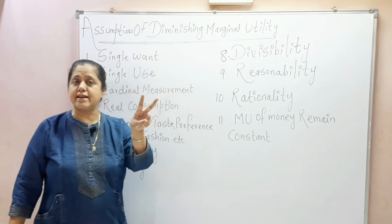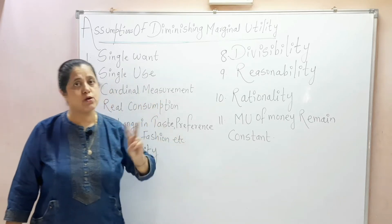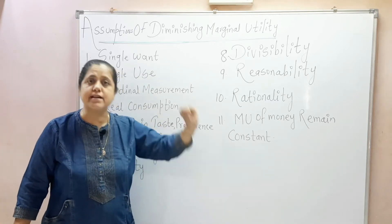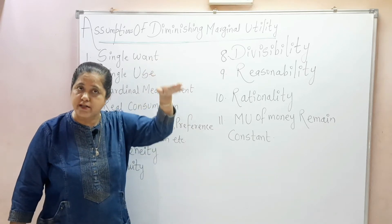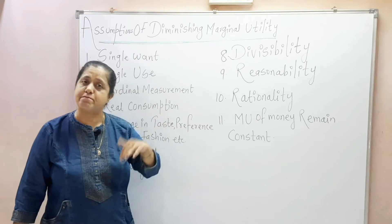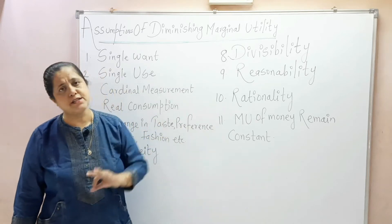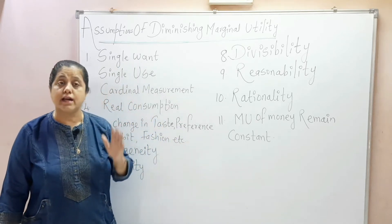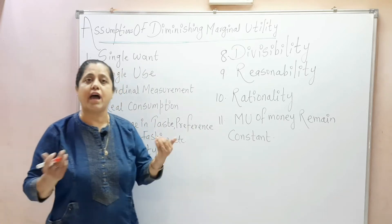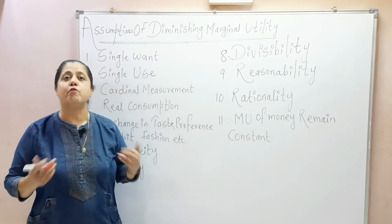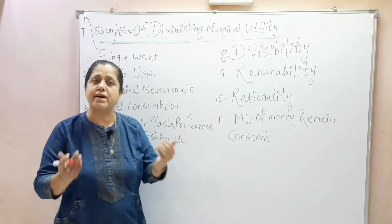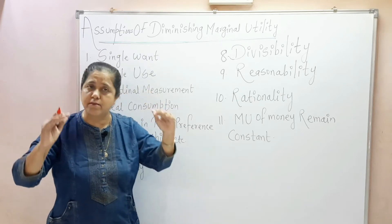Second statement: other things being equal or constant, the marginal utility derived with every increase in the unit of commodity will go on diminishing. You can write any definition or statement. Third statement: other things being equal or constant, the more we have a thing, the less we want to have more of it. Jo cheez aap ke paas zyada hoti hai, usse paane ki ichha bahut kam hoti hai.